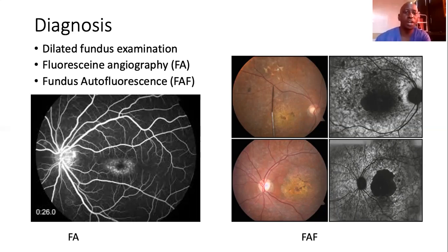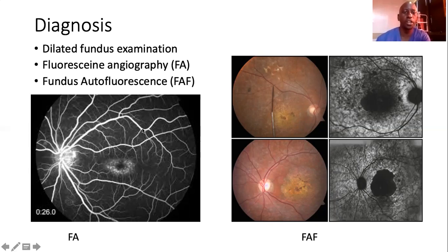In some cases, you have what is referred to as fundus flavimaculatus, where you have pale specks or flecks along the peripheral retina. Diagnostic tools used include fluorescein angiography, which gives you this typical dark choroid appearance, or fundus autofluorescence, which gives you areas of hypoautofluorescence in areas of RPE atrophy and hyperautofluorescence in areas of lipofuscin deposition.